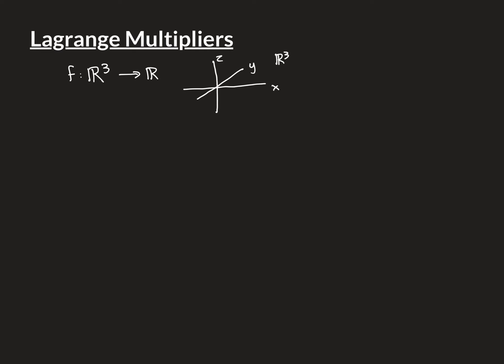An example you could think of is a temperature function T, which would ascribe the temperature — a real number — to every single point in three-dimensional space. But we could be dealing with much more general functions. We've just got some real-valued function of R3.